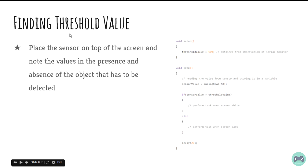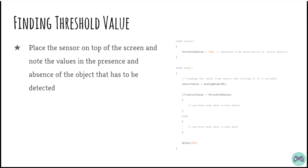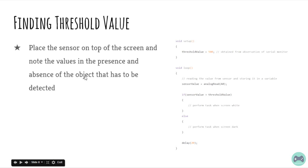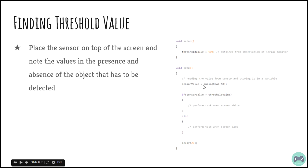This is how you can find a threshold value for your LDR circuit. You want to differentiate between the object being there and not being there. Place the sensor on top of your screen and note the values in the presence and absence of the object that has to be detected. If when the object is there the value is about 600 and when it is not there it is about 400, you can have a threshold value of 500 which is in between. Depending on that you can take action. Read the sensor value. If it's greater than threshold, do one thing. If it's not, do another thing.